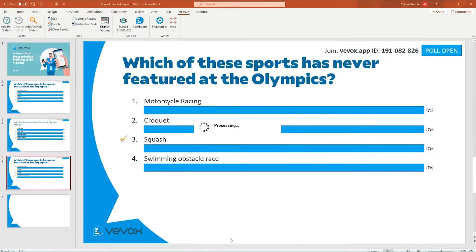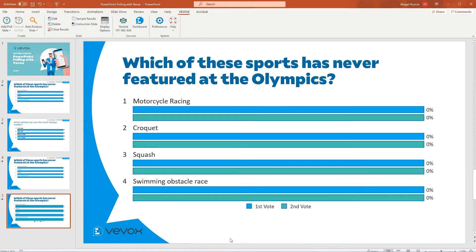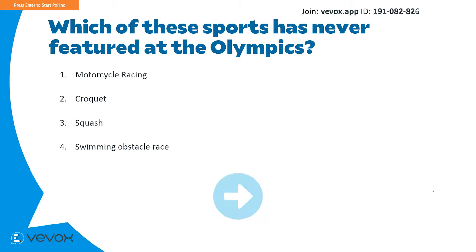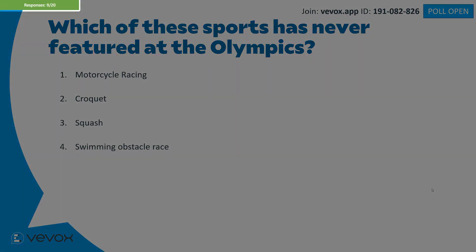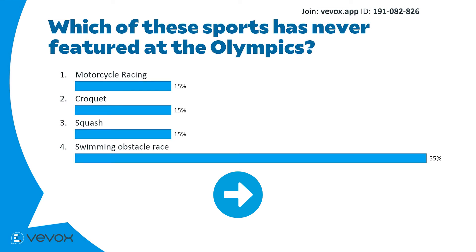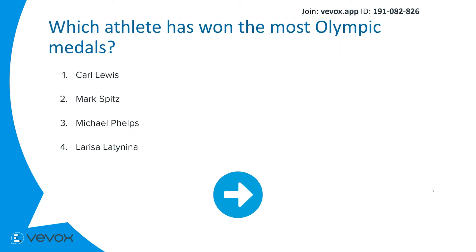You can find out more about analysis slides by going to our YouTube channel. Let's see a polling slide in action. When you reach a poll slide, advance as normal to open the poll. The number of responses will appear in the top left corner. When you're ready, advance the slide again to close the poll and display the results, then continue to the next slide.